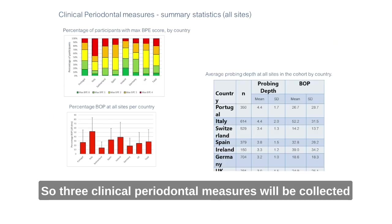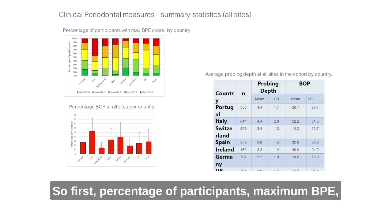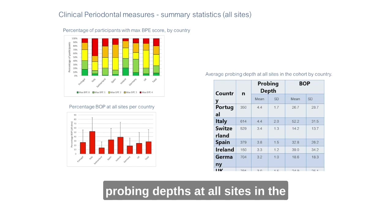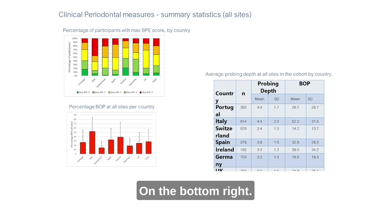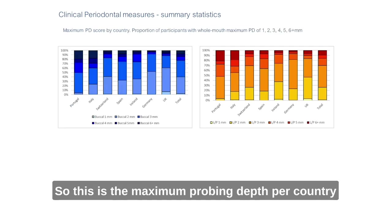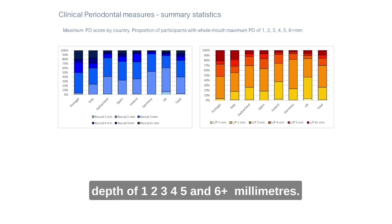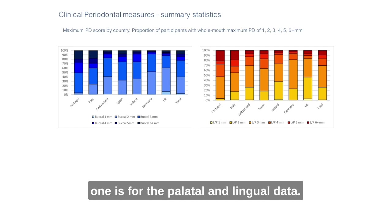Three clinical periodontal measures are presented on this slide: percentage of participants with maximum probing depth, percentage of bleeding on probing, and average probing depth at all sites across the participating countries. The bottom right shows maximum probing depth by country, with proportions of participants having maximum probing depths of 1, 2, 3, 4, 5, and 6+ millimeters. The blue is on the right, on the left is the buccal data, and the yellow and red represent palatal and lingual data.